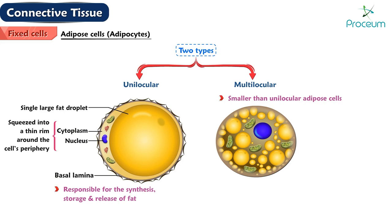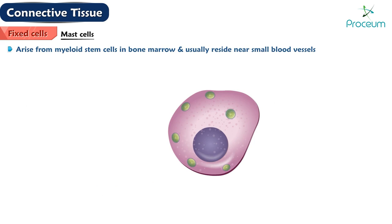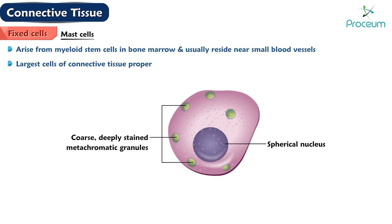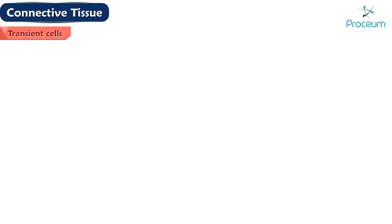Multilocular adipose cells are smaller than unilocular adipose cells and the fat is stored as many small fat droplets, and thus the spherical nucleus is centrally located. Mast cells arise from myeloid stem cells in bone marrow and usually reside near small blood vessels. These cells are one of the largest cells of connective tissue proper. They possess a central spherical nucleus, and their cytoplasm is filled with coarse, deeply stained metachromatic granules.